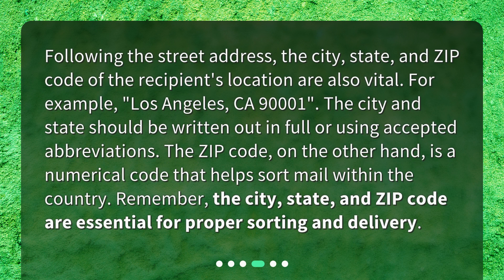Following the street address, the city, state, and zip code of the recipient's location are also vital. For example, Los Angeles, California, 90001. The city and state should be written out in full or using accepted abbreviations. The zip code, on the other hand, is a numerical code that helps sort mail within the country. Remember, the city, state, and zip code are essential for proper sorting and delivery.